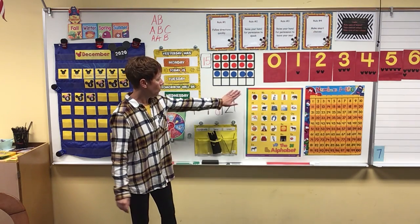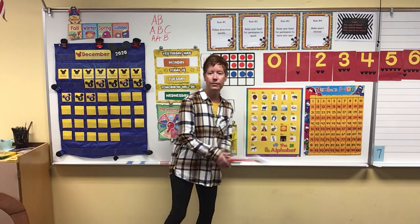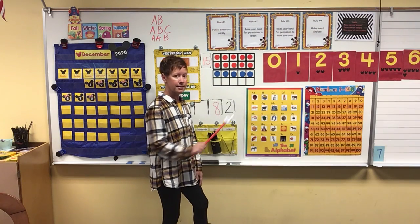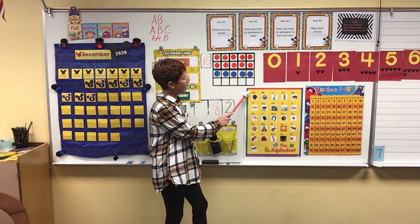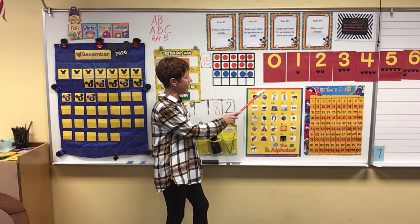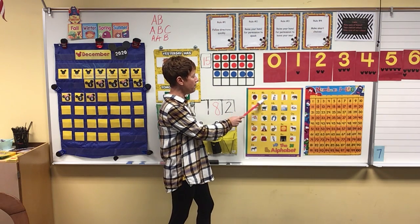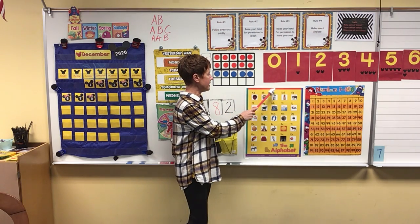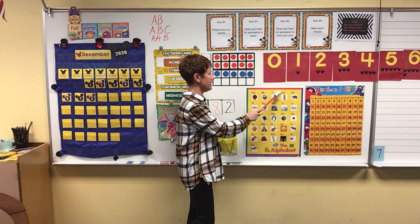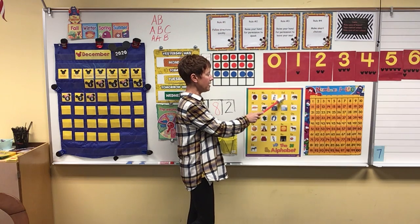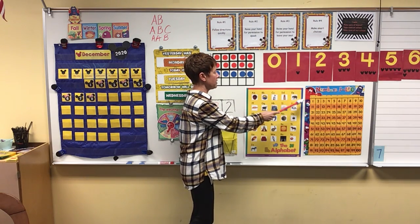We still need to say our letters in our alphabet chart. Please say it with me. A — apple. B — ball. C — cat. D — dog. E — elephant.